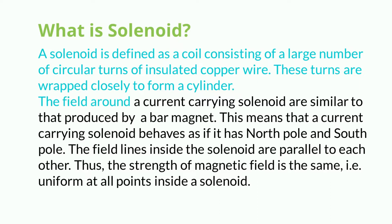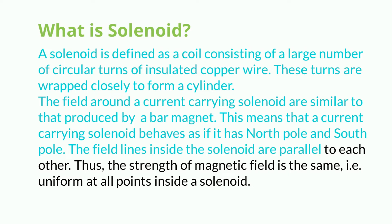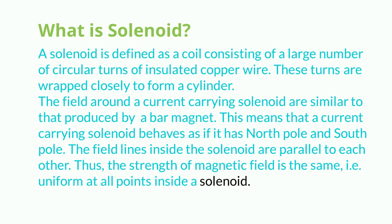The field around a current-carrying solenoid is similar to that produced by a bar magnet. This means that a current-carrying solenoid behaves as if it has a north pole and a south pole. The field lines inside the solenoid are parallel to each other, and thus the strength of the magnetic field is uniform at all points inside a solenoid.